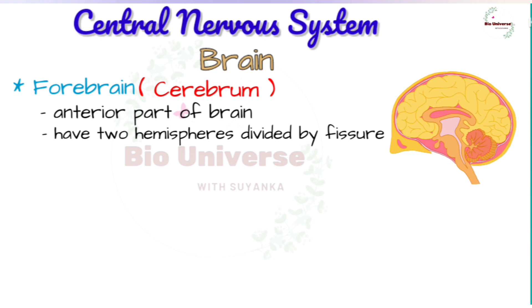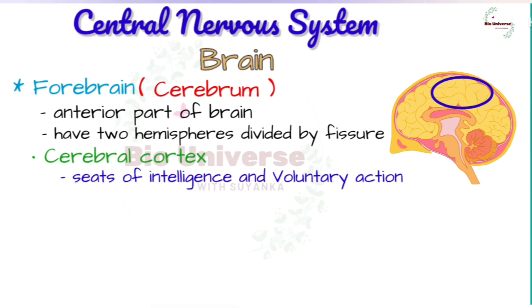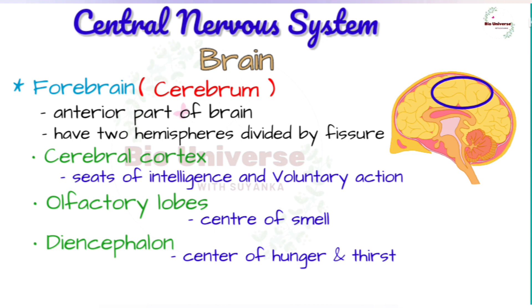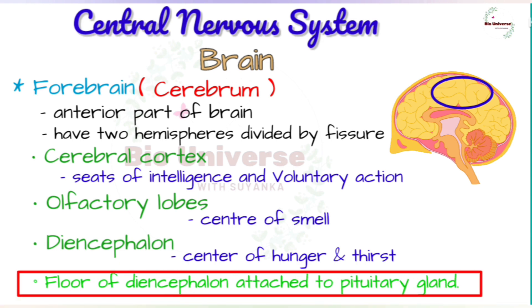The brain may be divided into three parts: forebrain, midbrain, and hindbrain. The forebrain, also known as the cerebrum, is the anterior part consisting of two large hemispheres divided by a longitudinal fissure. The surface of the hemisphere has many folds and is called the cerebral cortex. The folds serve to increase the surface area so that the maximum number of neurons can be present. The cerebral hemispheres are the seats of intelligence and voluntary actions. The forebrain also contains olfactory lobes, which are the center of smell, and the diencephalon, which has centers of hunger, thirst, etc. The pituitary gland is attached to the floor of the diencephalon.